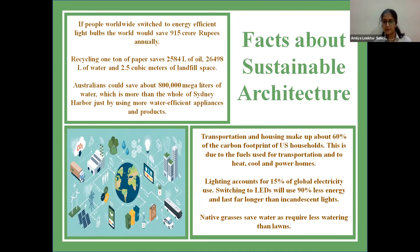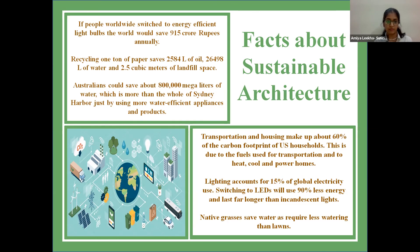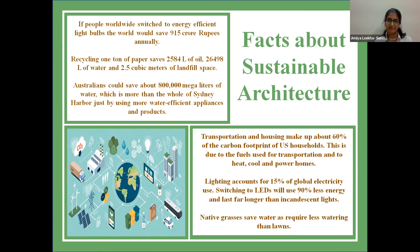Here are some key facts about sustainable architecture: If people worldwide switched to energy-efficient light bulbs, the world would save 915 crore rupees annually. Recycling one ton of paper saves 2,584 liters of oil, 26,498 liters of water, and 2.5 cubic meters of landfill space. Australians could save up to 800,000 megalitres of water — more than the entire Sydney Harbour — just by using more water-efficient appliances and products.